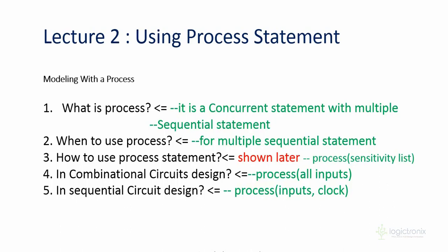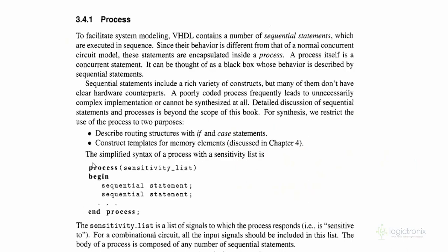Process includes a sensitivity list. The sensitivity list is a list of ports on which the process is dependent. Here we have the syntax: process with sensitivity list, beginning with begin and ending with end process. In between, there are different sequential statements like if-else, when-else, case, etc. On the sensitivity list, we need to list out all port names which affect the process. For combination circuits, all inputs must be listed. For sequential circuits, all inputs and the clock must be listed. Signals — which are like temporary variables or wires — sometimes also need to be listed.